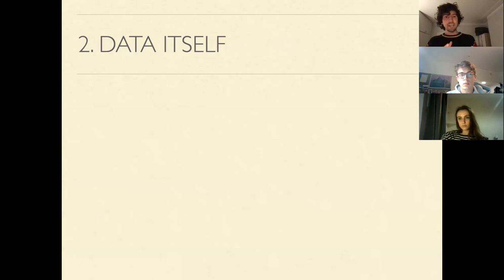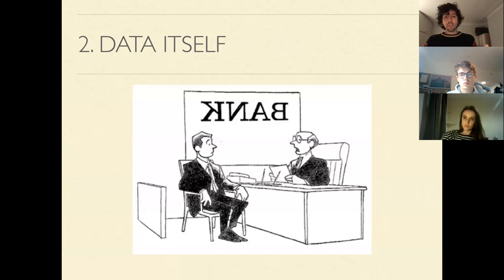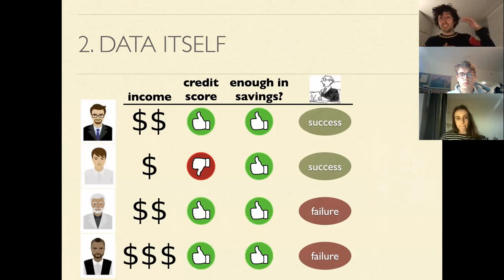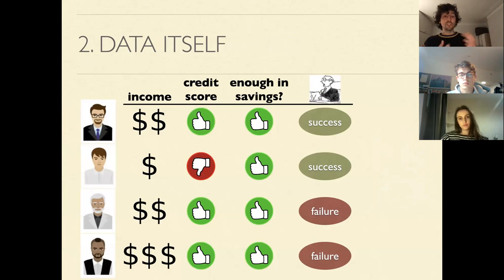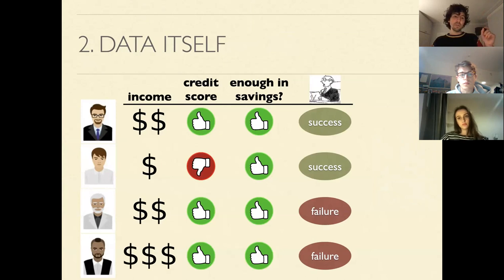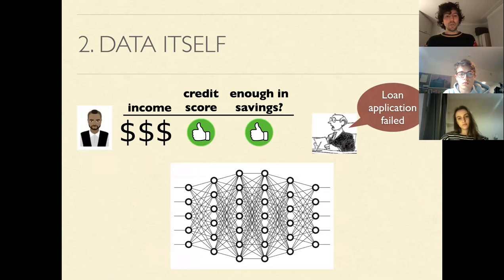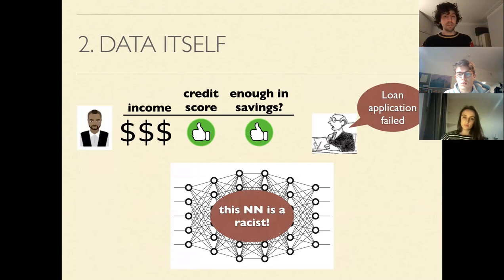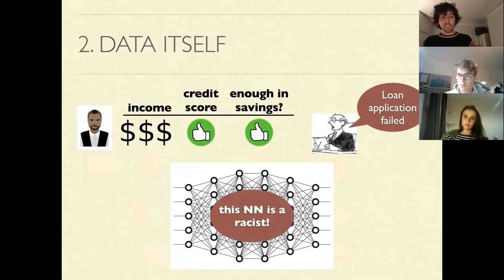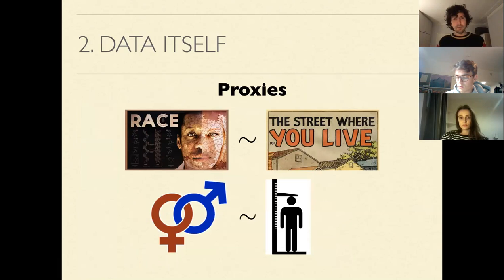I like to distinguish this from a different source of bias — bias in the data itself. Imagine you are a bank wanting to replace a bank teller with a machine learning algorithm. You collect decisions about loans that were offered and rejected, and the only thing distinguishing who received loans turns out to be race — the banker was racist. When you use that data to train your machine learning model, your model becomes racist as well.